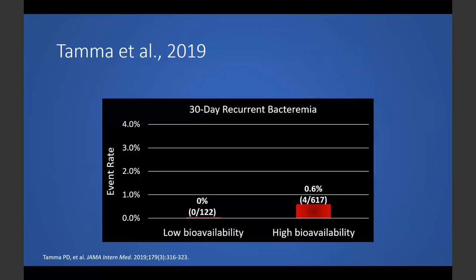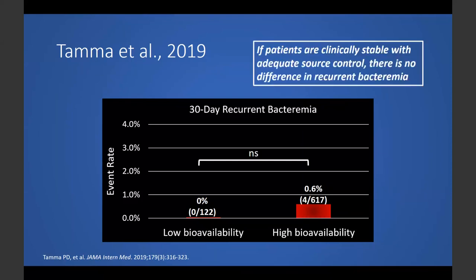In terms of outcomes in the Tana study, the primary analysis compared oral versus IV antibiotics, but there was a subgroup analysis looking at low bioavailability oral agents — oral beta-lactams — versus high bioavailability agents — fluoroquinolones and sulfamethoxazole-trimethoprim. For recurrent bacteremia at 30 days: 0% in the low bioavailability group versus 0.6% in the high bioavailability group. Event rates were very low and the difference was not statistically significant, suggesting that in clinically stable patients with adequate source control, there was no meaningful difference in recurrent bacteremia with oral beta-lactams.